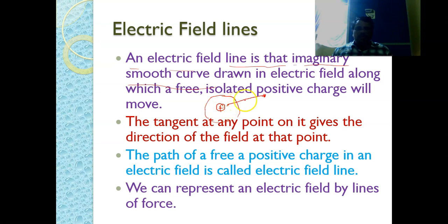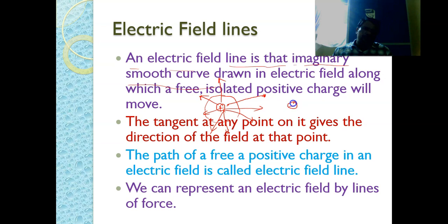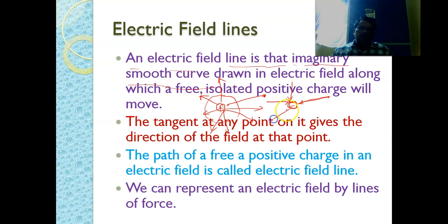For a positive charge, the electric field lines will be directed away from the center. For a negative charge, if you bring a positive charge from some place toward the negative charge, it is attracted and moves near to the negative charge. That is why the electric field lines are always directed inward for a negative charge.